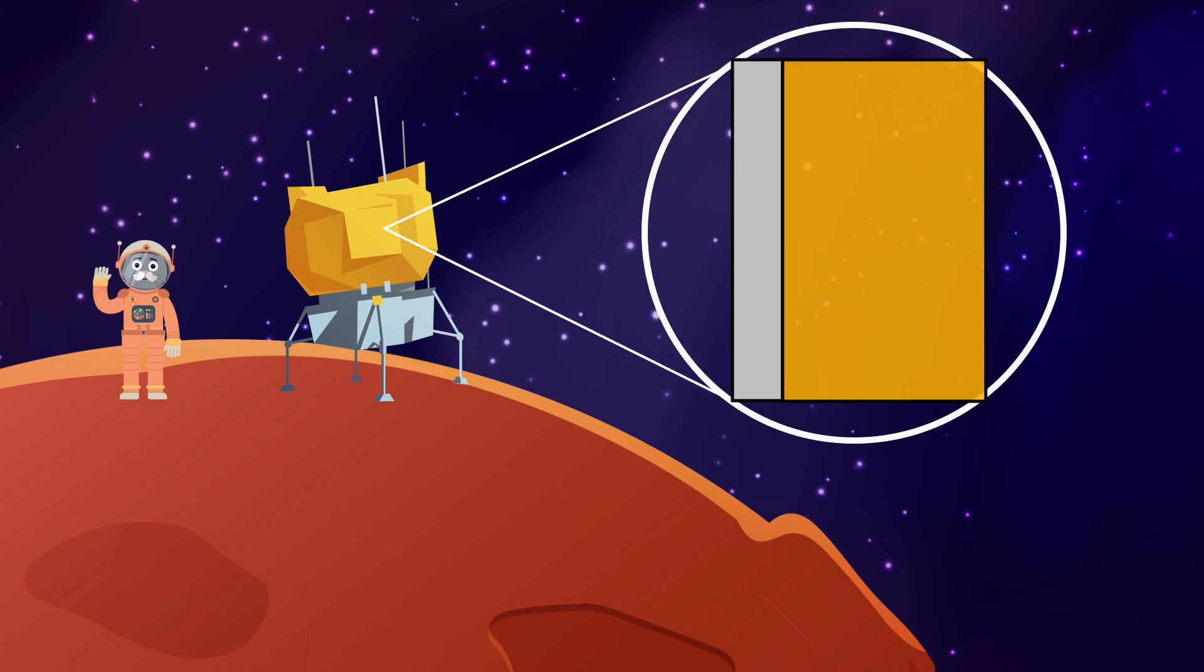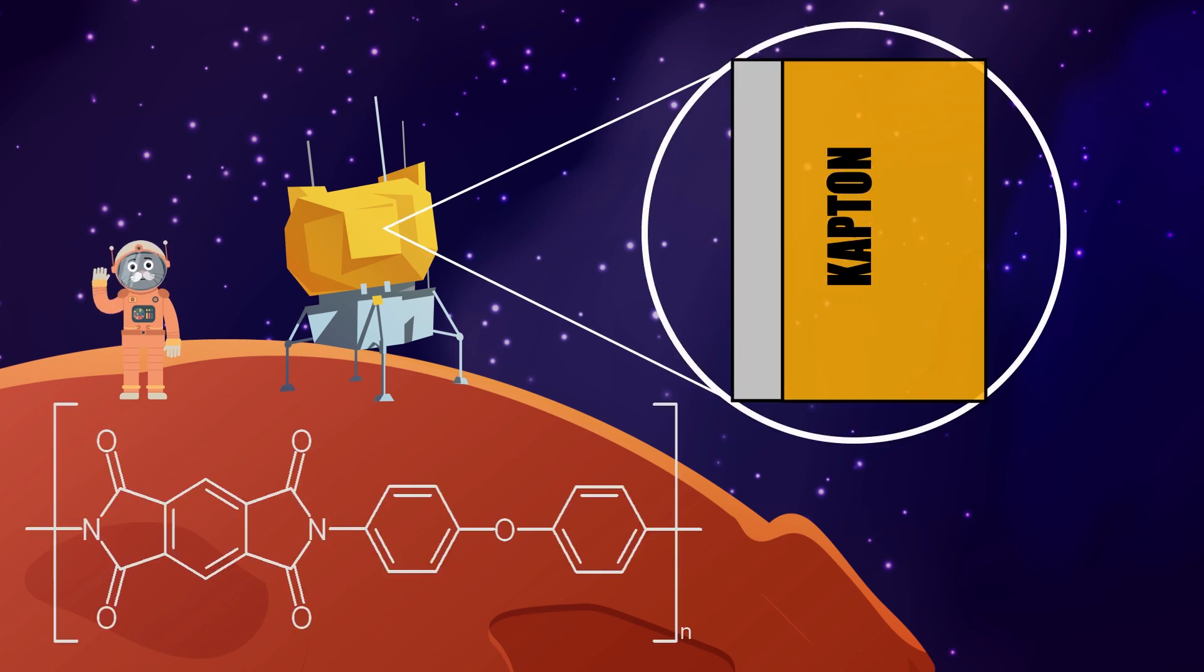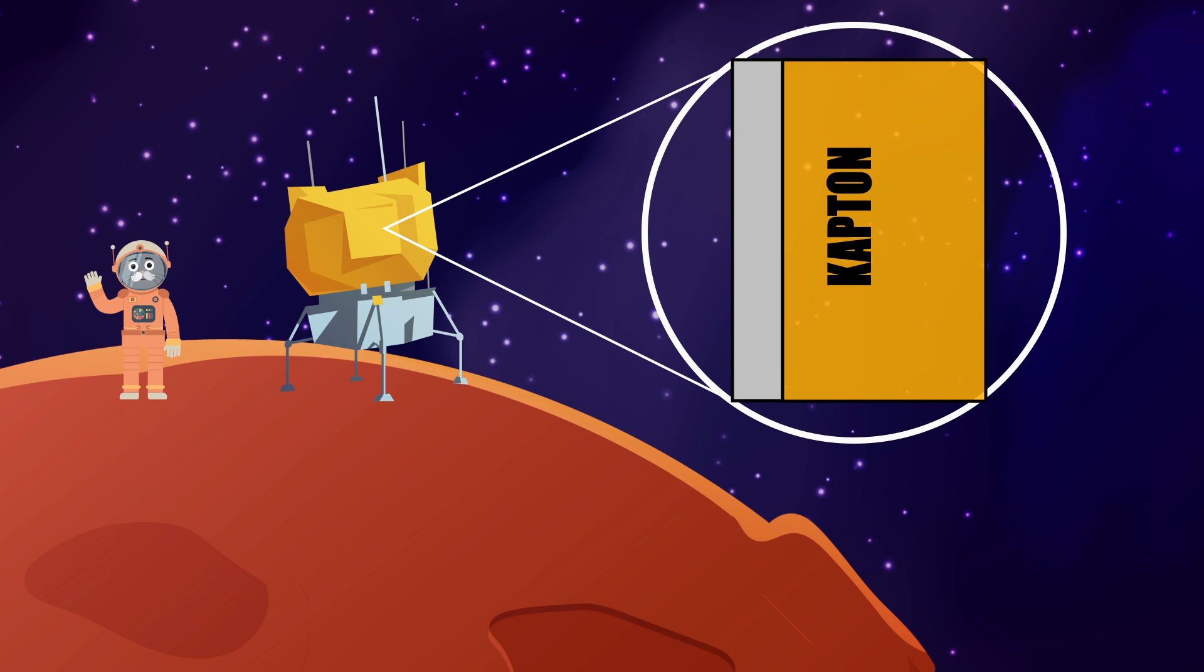This is often made of kapton, a polyamide which provides high reflectivity against solar radiation. Below that they have a material that reflects as much of the sun's light as possible, which is usually silver or aluminum.